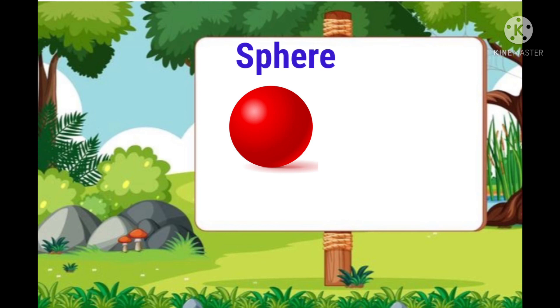Final one, sphere. Some objects have the shape of a ball. We call this shape a sphere.